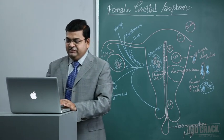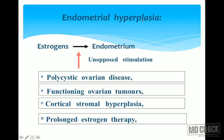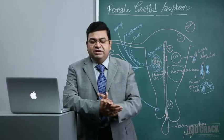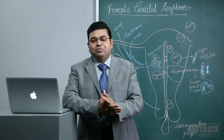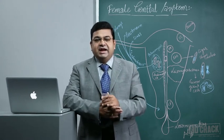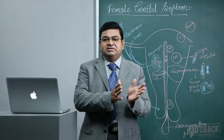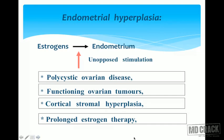With excessive estrogen effect there can be endometrial hyperplasia, most often due to unopposed excessive stimulation of the endometrial glands by estrogens. Causes include polycystic ovarian disease, functioning ovarian tumors — most importantly granulosa cell tumors which secrete excess estrogens — adrenal cortical hyperplasia with excessive estrogen secretion, and prolonged exogenous estrogen therapy. Patients with a hyperestrogenic status can develop hyperplasia which may even progress to malignancy.